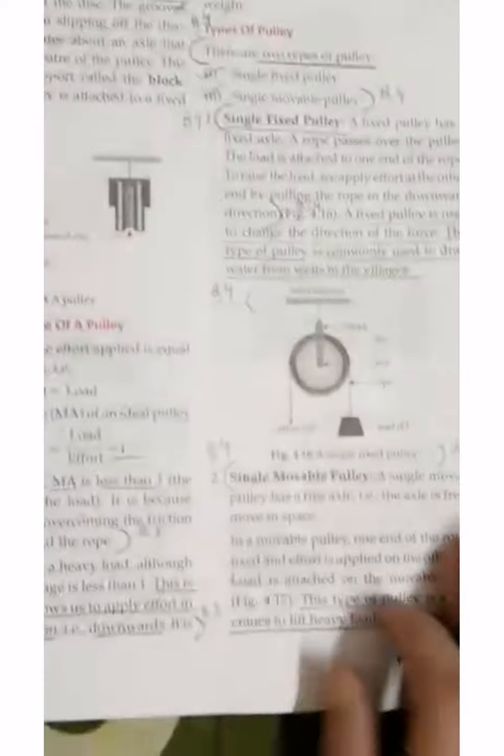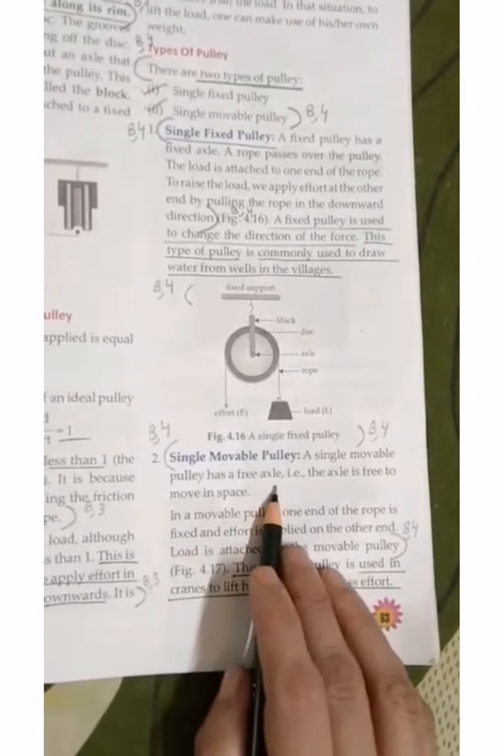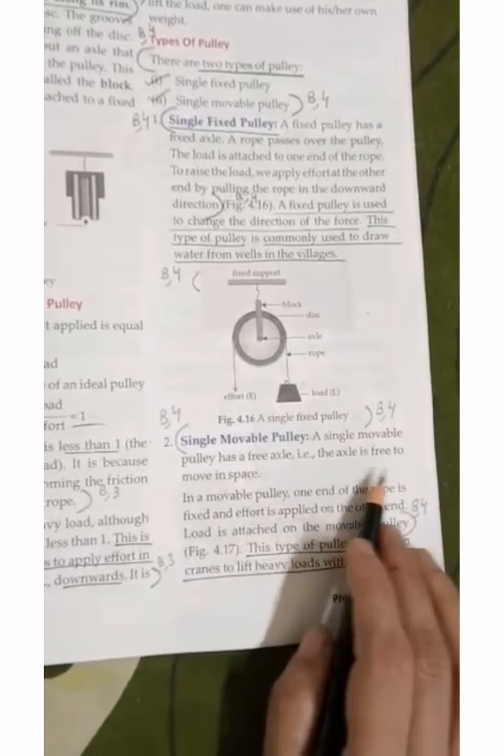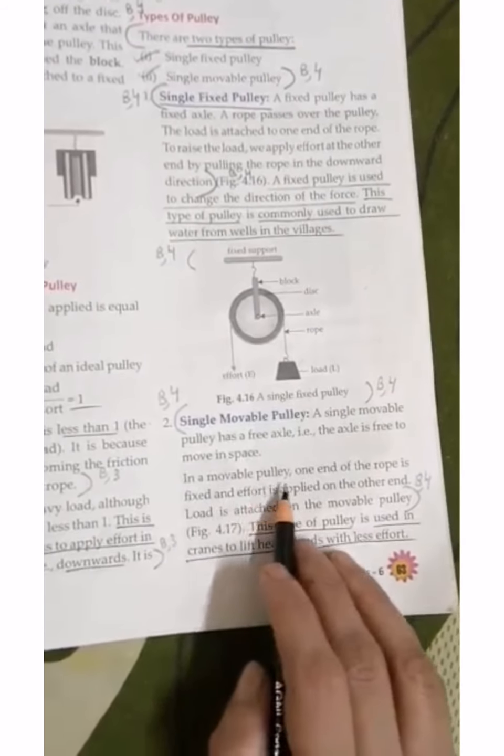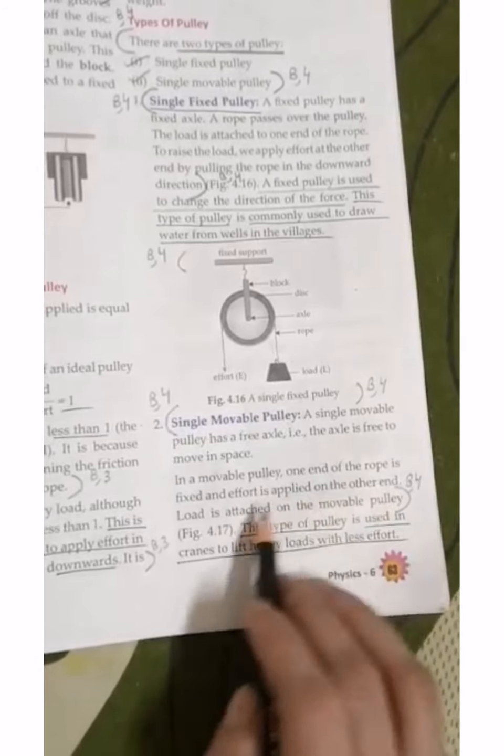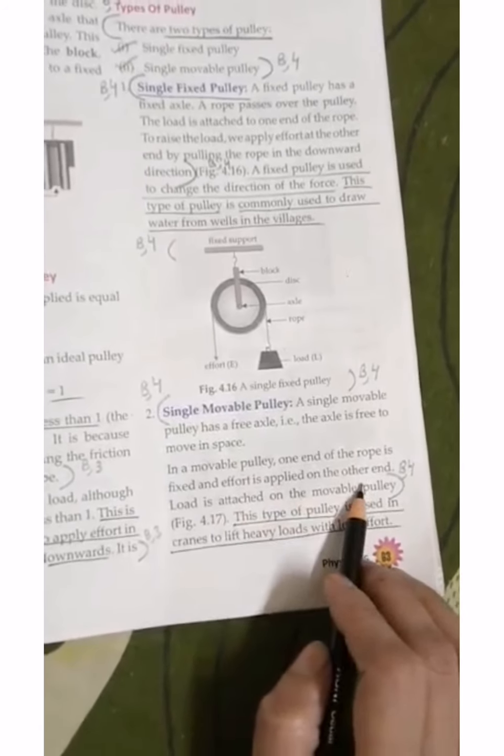Come to the definition. What is written here? Single Movable Pulley - free axle, it is free to move. In the movable pulley, one end of the rope is fixed and the effort is applied on the other end.